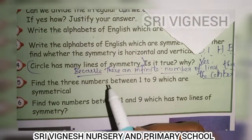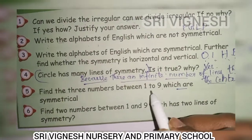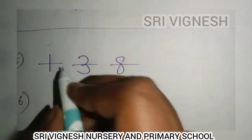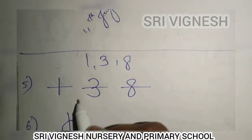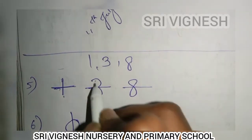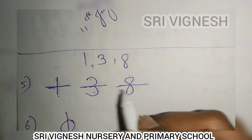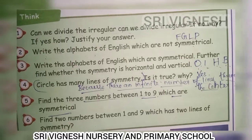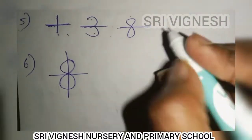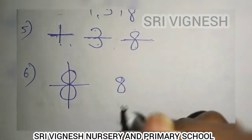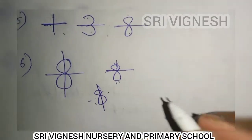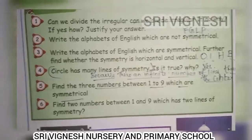Next, find three numbers between 1 to 9 which are symmetrical. There are numbers between 1 to 9. The number 3 is symmetrical. This is the number 3 — this is symmetrical.